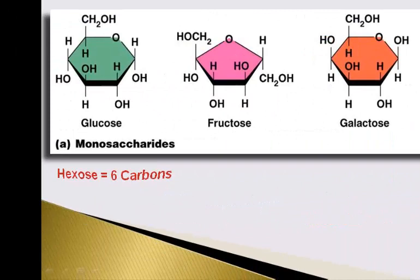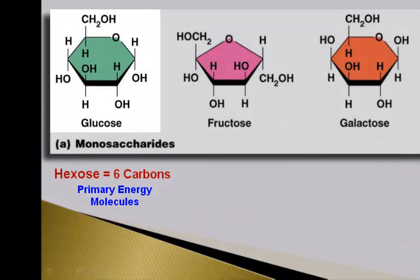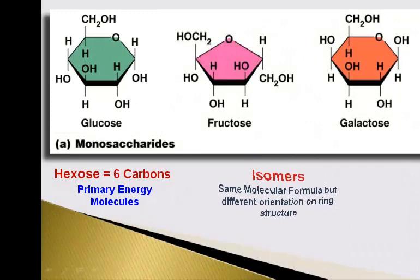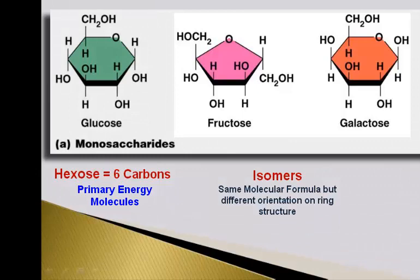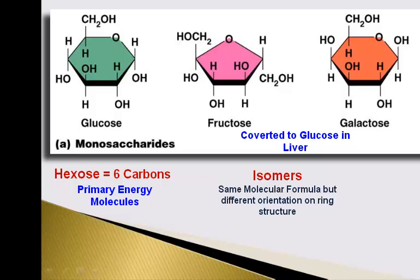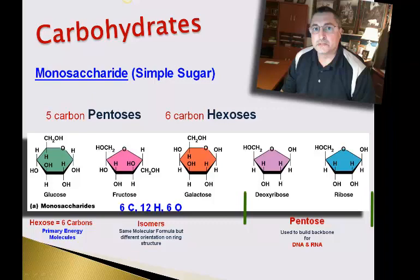The key monosaccharides used as energy sources are the six-carbon hexoses, with glucose being first and foremost. Glucose has two isomers — fructose and galactose — which are molecules with the same molecular formula but different orientation of elements on the ring structure. Fructose and galactose will be converted in the liver to glucose before being used as an energy source. Glucose, fructose, and galactose each have six carbons, twelve hydrogens, and six oxygens; ribose and deoxyribose have five carbons, ten hydrogens, and five oxygens.